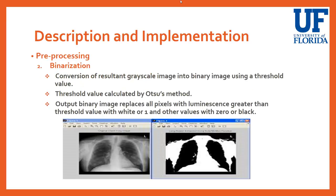The next pre-processing step is binarization — the process of converting the grayscale image into a binary image using threshold values. This threshold value is calculated by a graythresh function which uses Otsu's method of calculating intraclass variance of black and white pixels. The output binary image replaces all pixels with luminescence greater than the threshold with white (1), and those below the threshold with black (0).